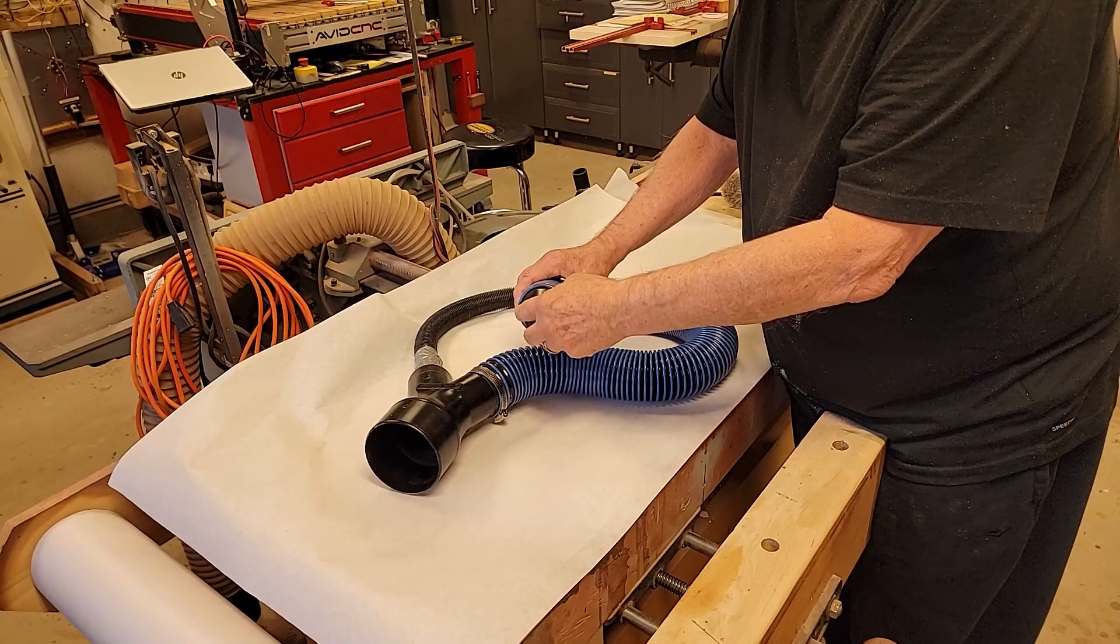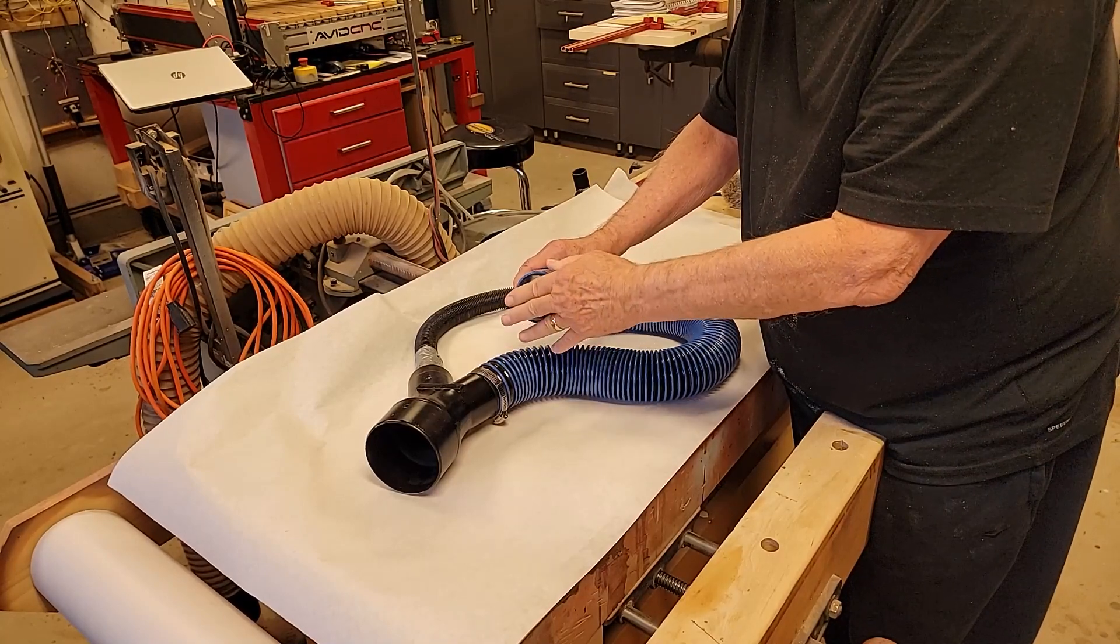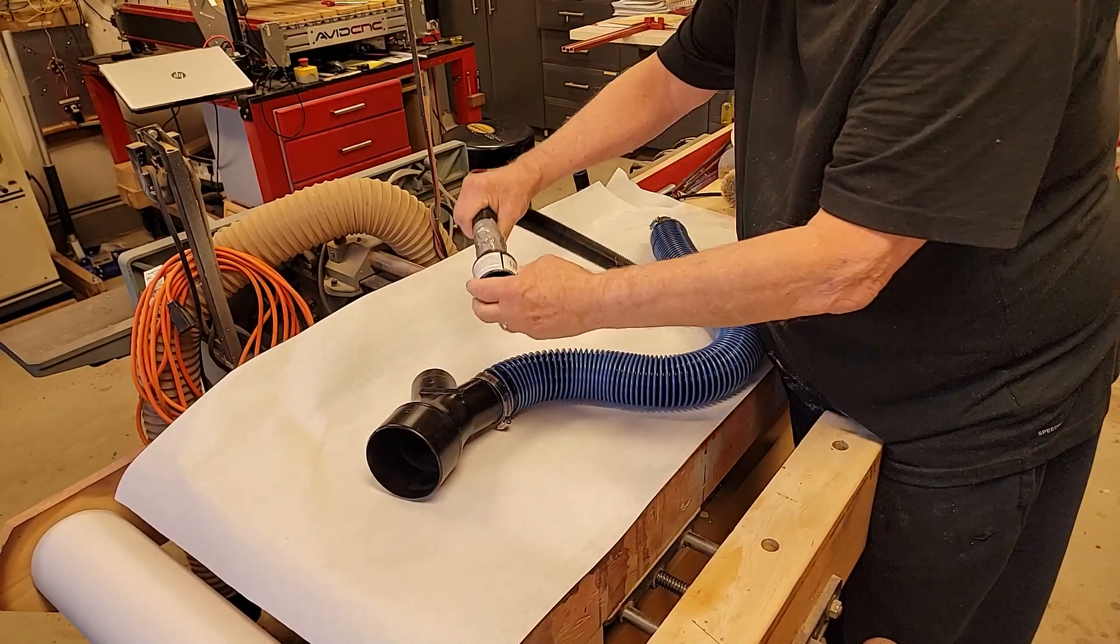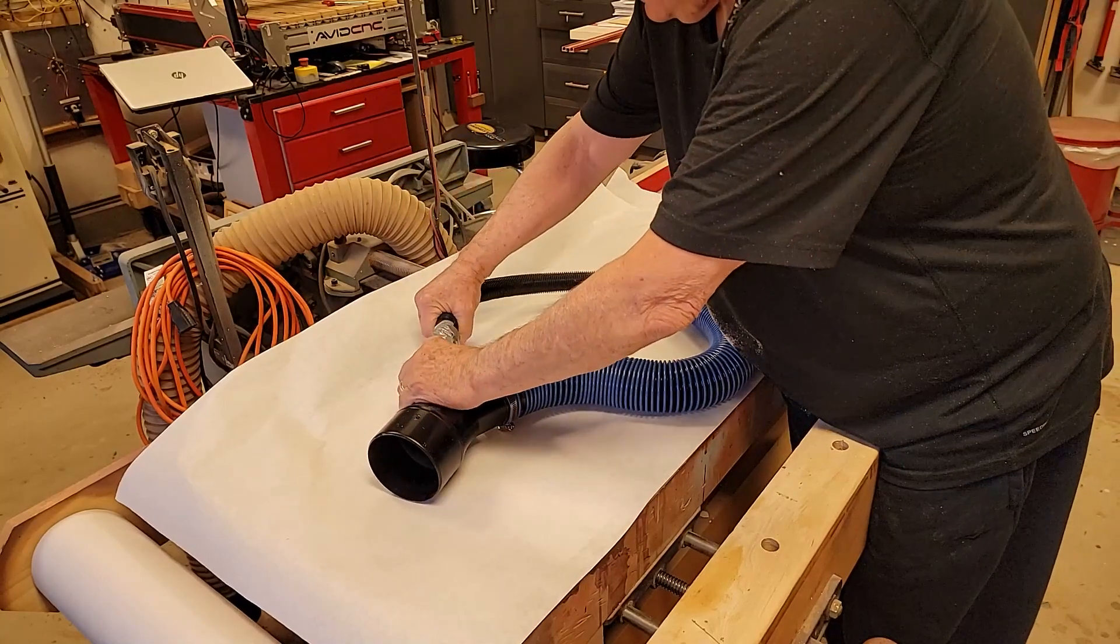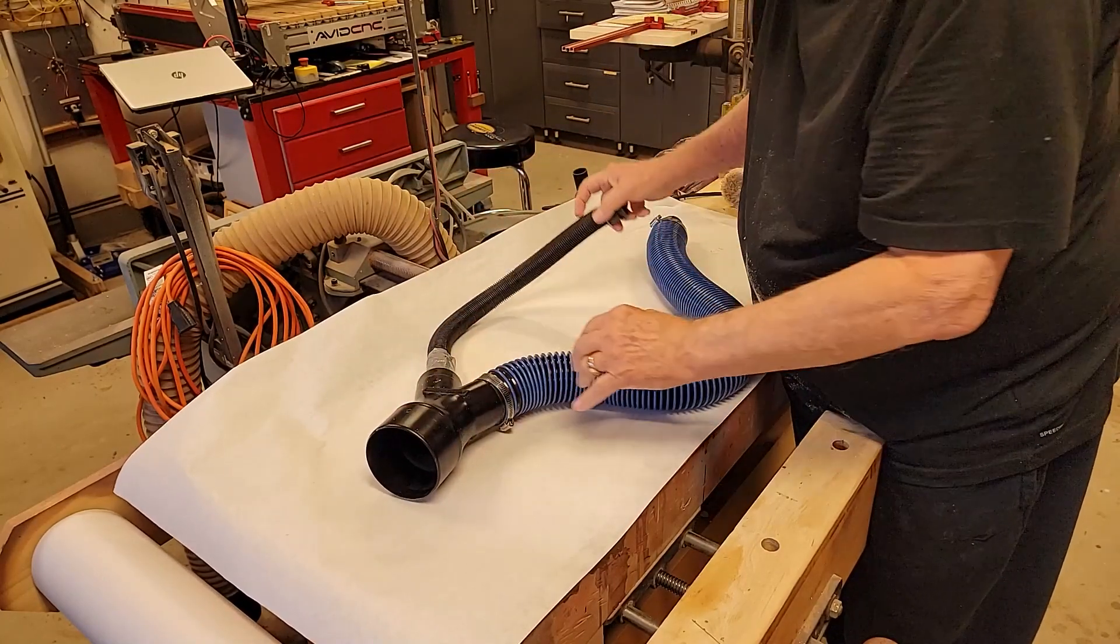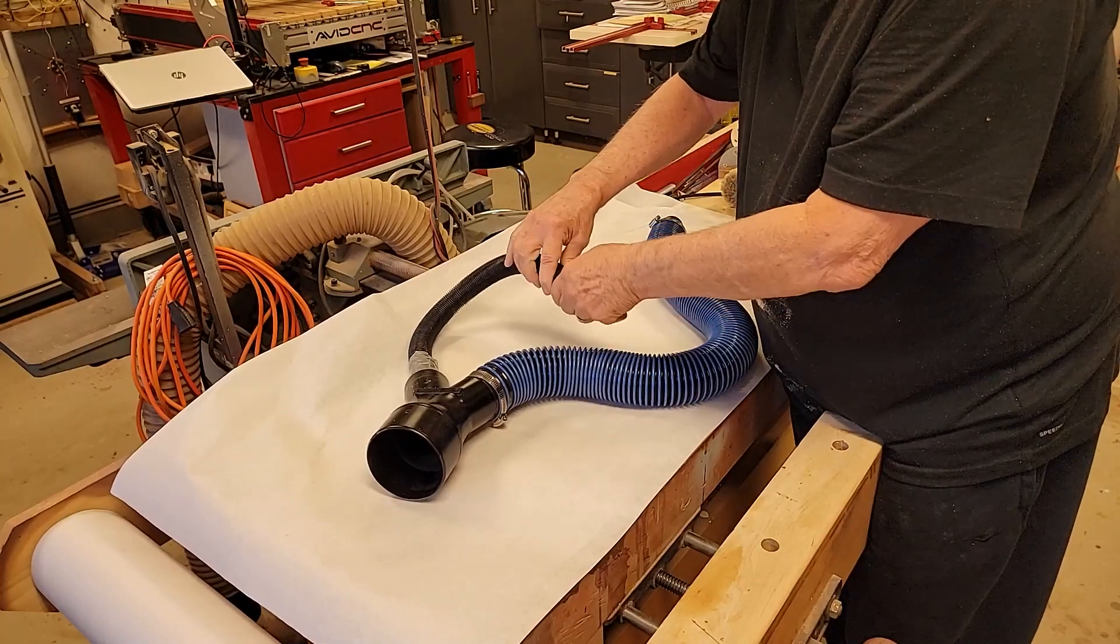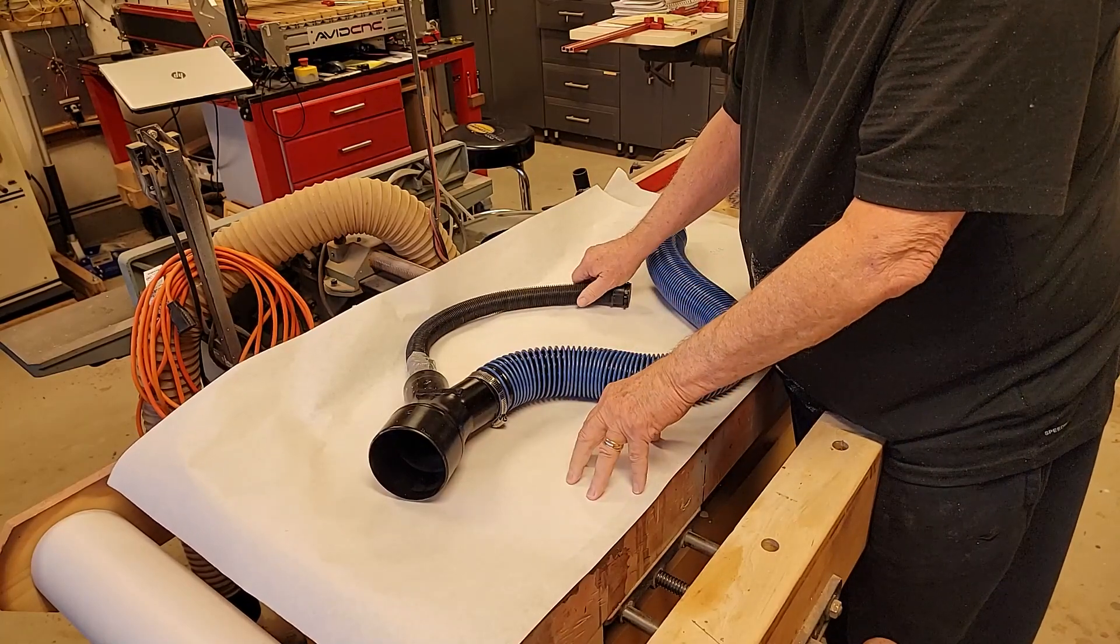That comes down to a 2.5-inch to 1 and 3/8-inch adapter, and that one will fit snugly onto the main part of the miter saw. Then on this side we went from the 2.5-inch down to a 1-inch, and then that hose, which is the hose that came with the saw, will connect onto the auxiliary side of the miter saw.